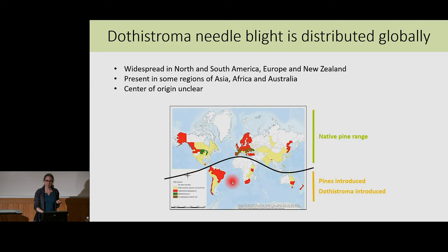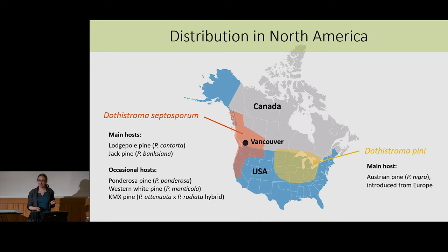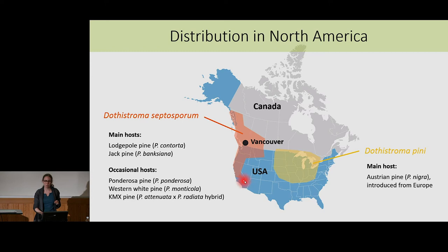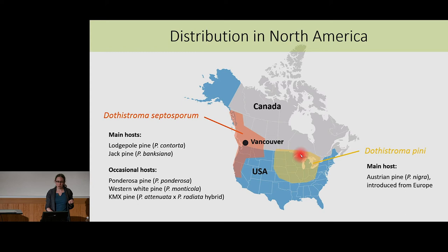For today I will focus on North America and just on Dotistroma septosporum, where we have the most data and are most progressed with the analysis. Dotistroma septosporum occurs in a wide range of habitats along the Pacific coast in the US and Canada, mostly found on Lodgepole pine and the related Jack pine, but also occasionally on other pine hosts. The other species, Dotistroma pinae, occurs in a different area mostly in the center of the US, where it's found on Austrian pine, Pinus nigra, which is an introduced species from Europe.